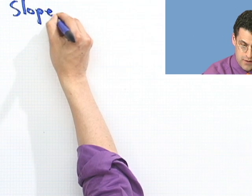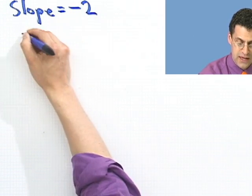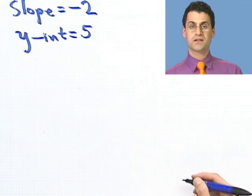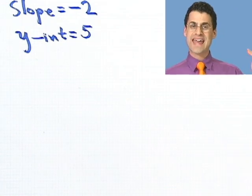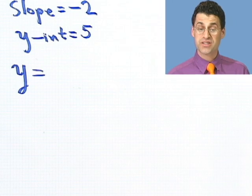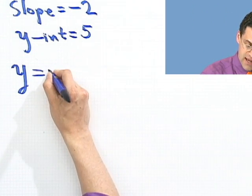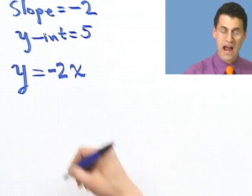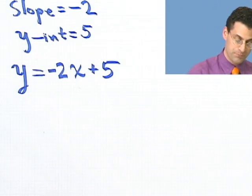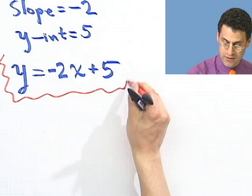Find the equation of the line that has slope equal to minus 2 and y-intercept 5. Piece of cake! All you do is say y equals mx plus b. m is the slope — in this case negative 2 — so write negative 2 times x, then plus the y-intercept, so plus 5. That is the equation of the line. No more work.